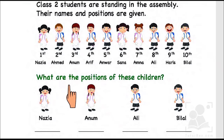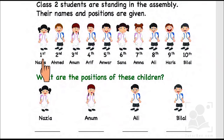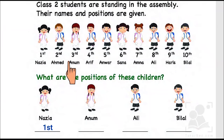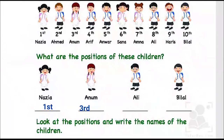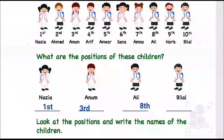Let's check the positions of these children. Nazia is standing at first position, so we'll write first over here. Anam is at third position. Ali is at eighth position. Bilal is the last, that is tenth position.